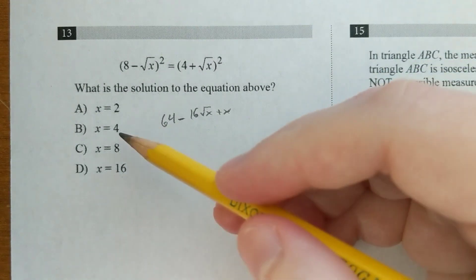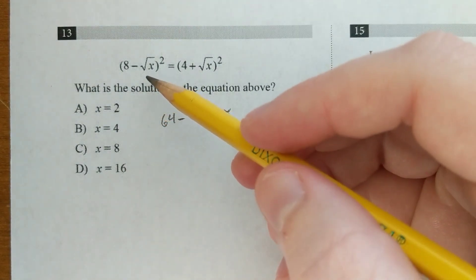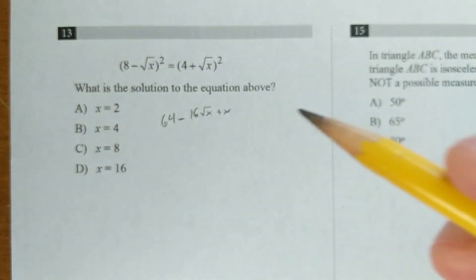So instead, just plug in the answers. I would start with the ones that are perfect squares, because it's pretty unlikely you're going to end up with like 8 minus root 2 as your answer.